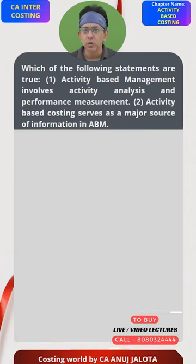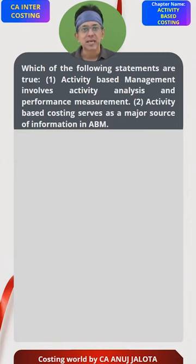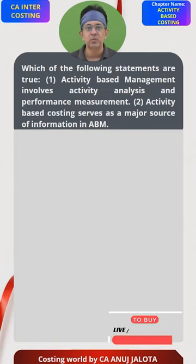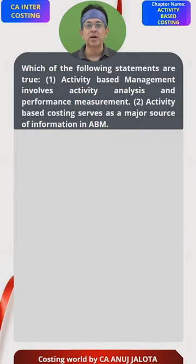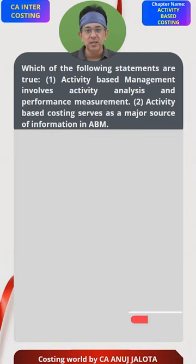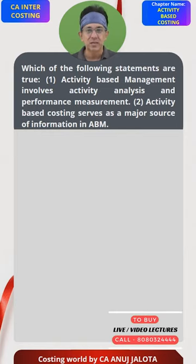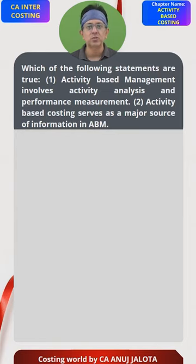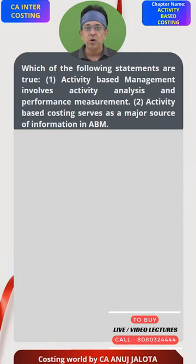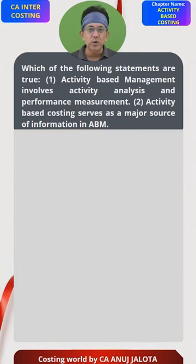Before looking into the four options, let's examine the second part: Activity-Based Costing serves as a major source of information in ABM. ABM is the management part of Activity-Based Costing — you use the data of Activity-Based Costing and then think: is this cost high? For example, Ordering Cost was one of the costs. Once you generate the data through Activity-Based Costing, you start thinking — was my Ordering Cost high? What was the cost driver rate?